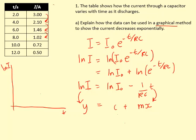Of course, I'll need to work out ln(I) first. By doing ln(3), which is 1.10. ln(2.10) gives me 0.74, and so on. And if I plot this, I'll get a line that looks like this. And the gradient of this line should be -1/RC.